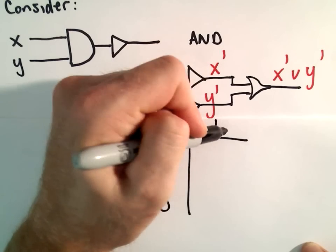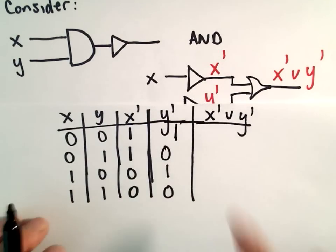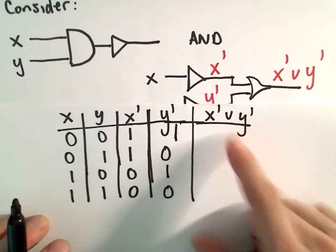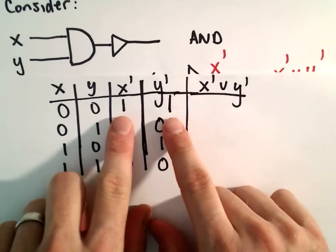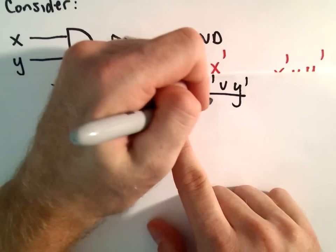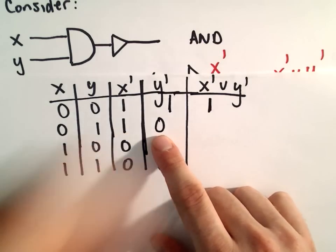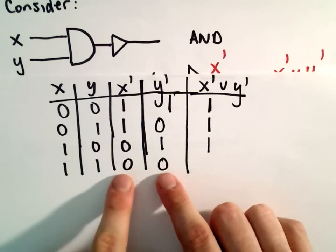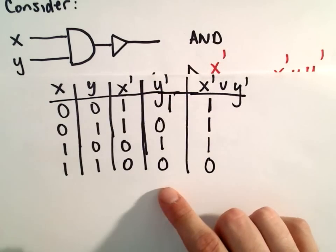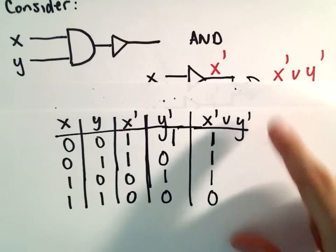Now I have to look at not x or not y. The value for this statement will equal 1 if either statement or both equals 1. In the first row they're both 1, so we'll get an output of 1. The second row, the first one's a 1, so we'll get an output of 1. Third row, we'll get a 1. Our fourth row, we'll get a 0. So there's our truth table for our second circuit.